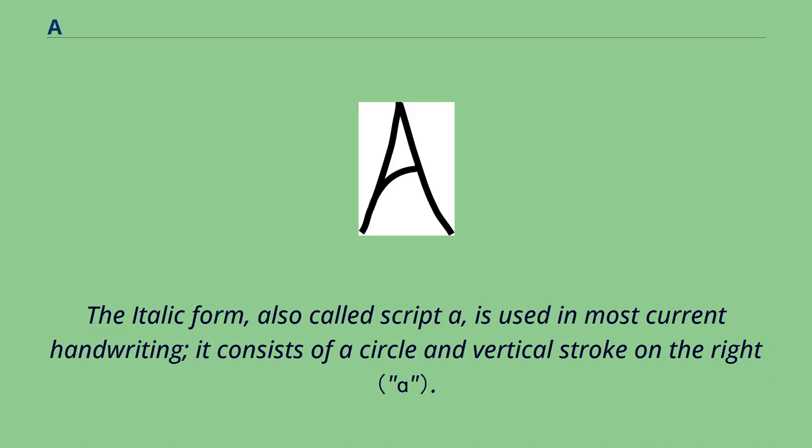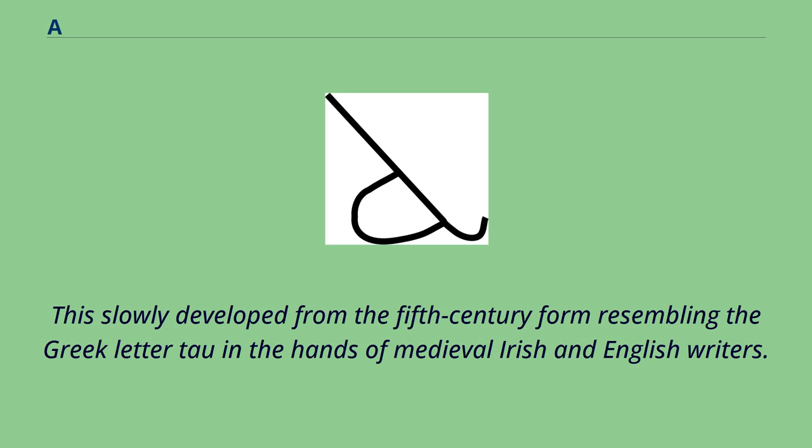The italic form, also called script A, is used in most current handwriting. It consists of a circle and vertical stroke on the right. This slowly developed from the 5th century form resembling the Greek letter tau in the hands of medieval Irish and English writers.